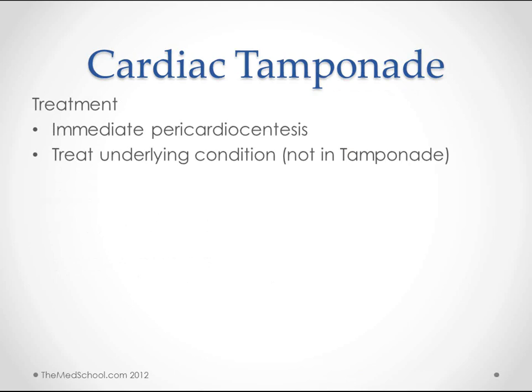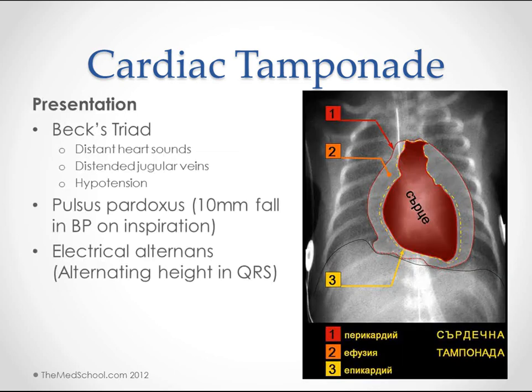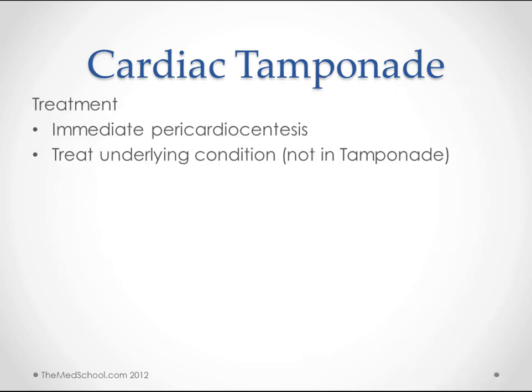The treatment of cardiac tamponade includes immediate pericardiocentesis — there are good YouTube videos on how to do that — basically we're just letting all the fluid drain out of the pericardium. If it's not quite a tamponade but you do have an effusion or hemopericardium, you can just work on treating the underlying condition and the fluid will resolve itself. But if it is tamponade — pulsus paradoxus, electrical alternans, and Beck's Triad — it's time to do pericardiocentesis.